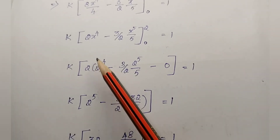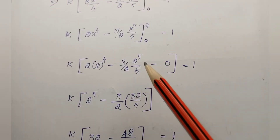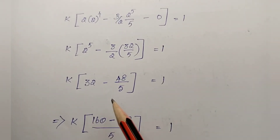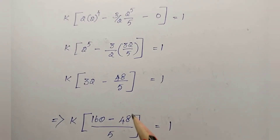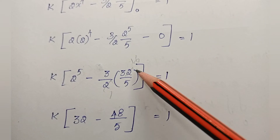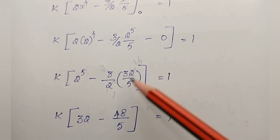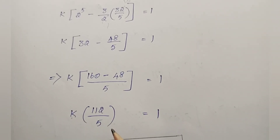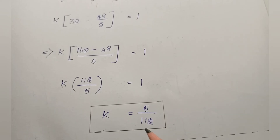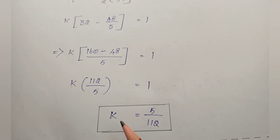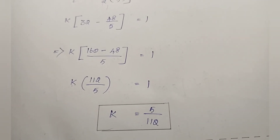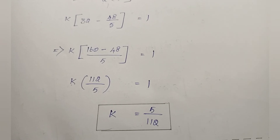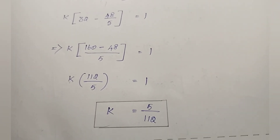k times (2 to the power 5 minus (3/2) times 32/5) equals 1. Since 2⁵ = 32: k times (32 minus 48/5) equals 1. Taking the LCM and simplifying: k times (160/5 minus 48/5) = k times (112/5) = 1. Therefore k = 5/112. This is the final answer for k. Thank you, the next video will cover similar problems.